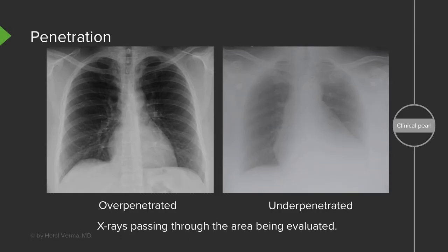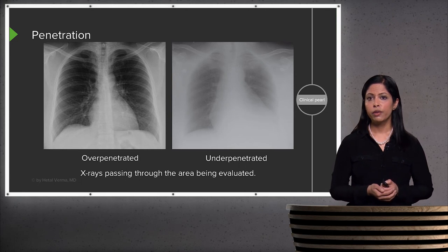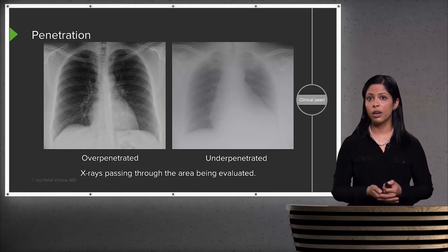Penetration is another technical factor. The film on the left is overpenetrated while the film on the right is underpenetrated. Penetration refers to the amount of x-rays passing through the area being evaluated, and it can differ based on patient body type. If a film is overpenetrated, everything will appear very dark, which can mimic abnormalities such as a pneumothorax. If a film is underpenetrated, everything will look very white, making it difficult to see what's going on in the lungs.